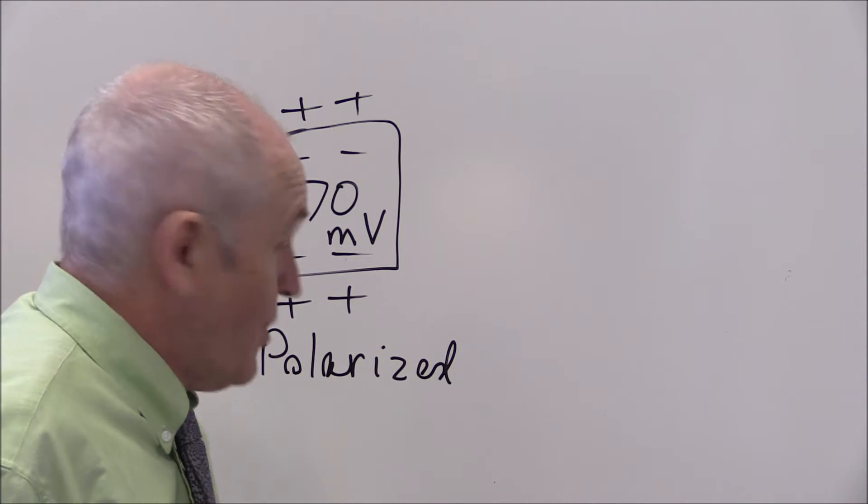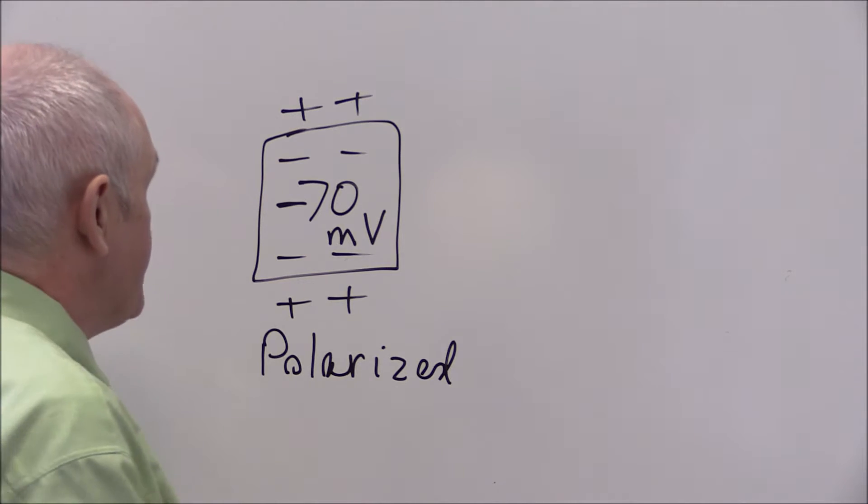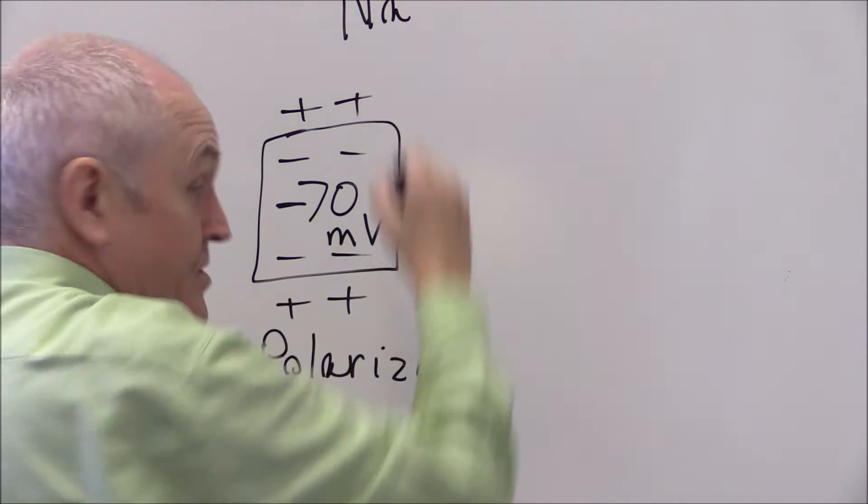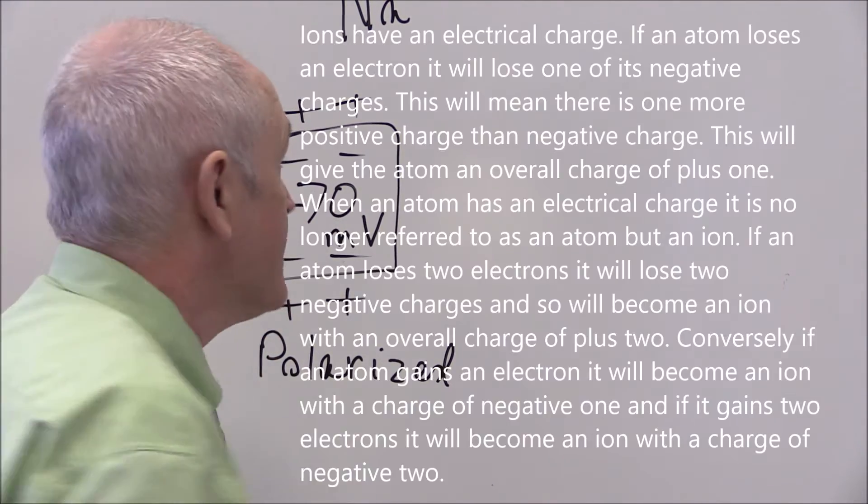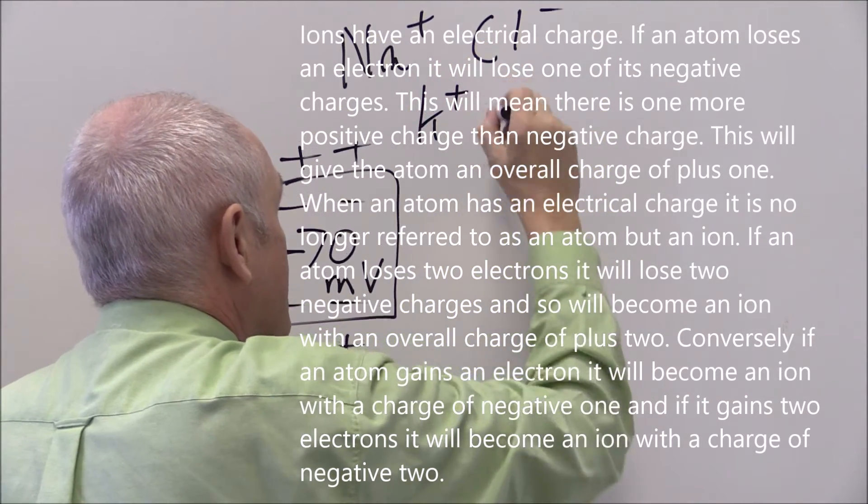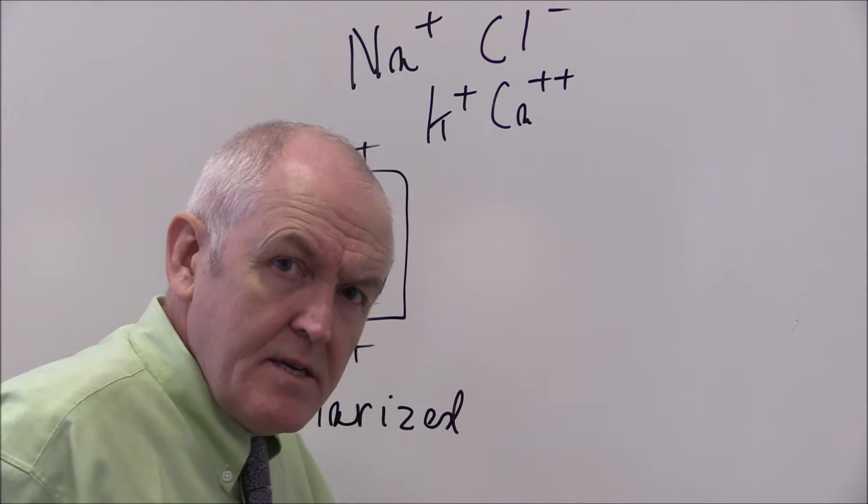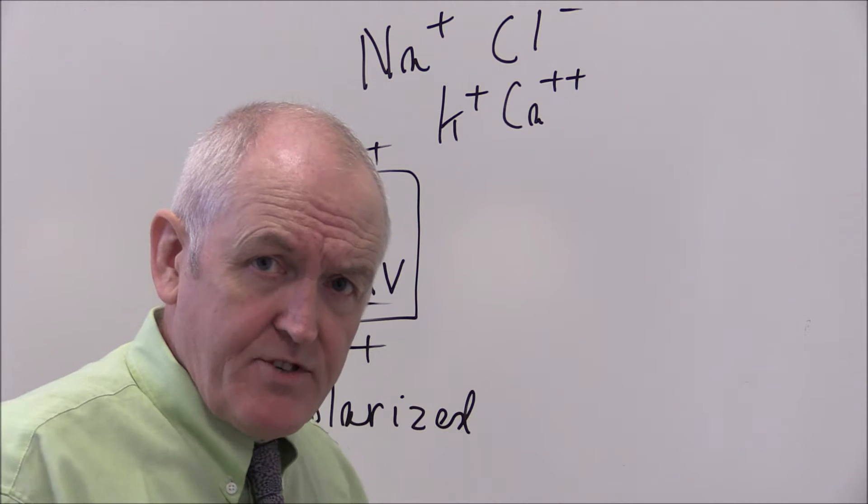And what's actually happening, or one of the things that's happening, is that in the body of course you have ions, you have sodium, which is a positive ion. An ion is an atom with an electrical charge. We have chloride, we have potassium, we have calcium. These in solution are in ionic form and they have charges.